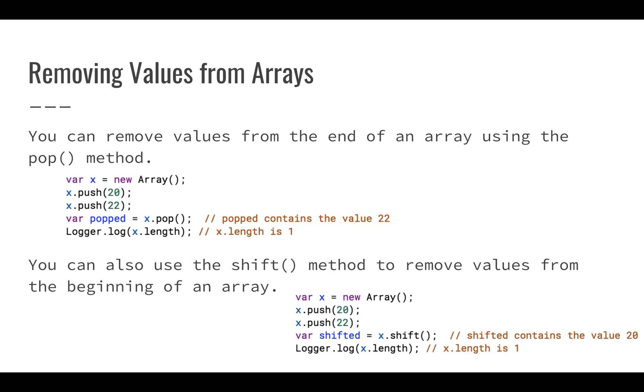I can use the shift method to remove values from the beginning of my array. So I can use pop to take it off of the end, shift will take it off of the beginning. And you can see in this example, we're going to push 20, push 22. If we shift, we're going to get 20 off of that array instead of 22, and our length is going to be one again. So you can see how this is going to not only give you a value back from the array, but it is also going to remove that value from the array. So this shift and this pop, they both modify the state of my array.